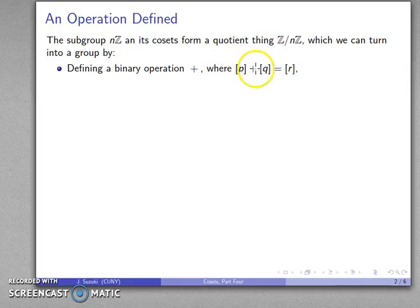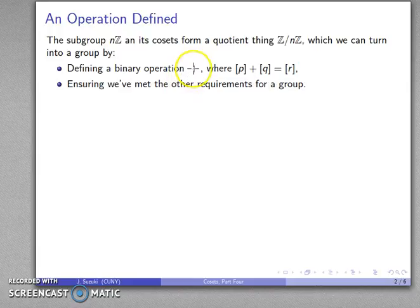where I can take two of the cosets and form it into a third coset. The other thing we have to do is just defining the binary operation is not enough. We do have to make sure that we have the other group requirements.